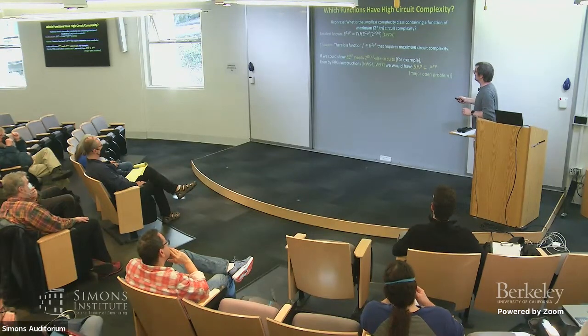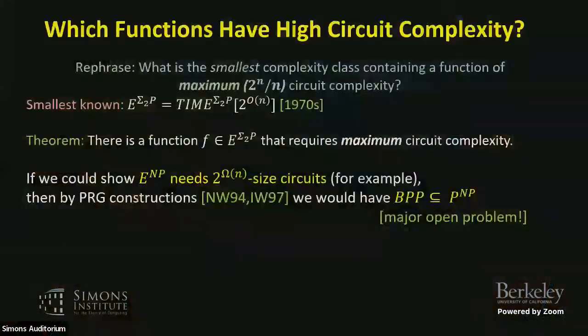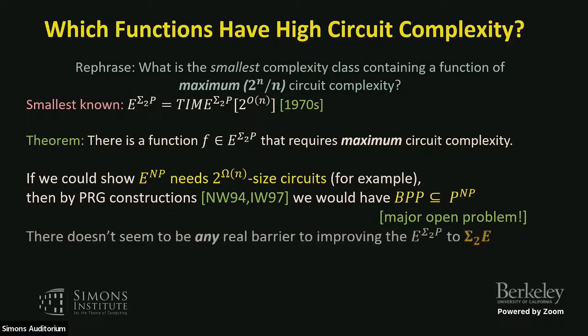If we could show that E^NP — which is supposedly smaller — needs exponential-size circuits, then by PRG constructions (assuming it holds almost everywhere), we'd have BPP contained in P^NP. That would be a major open problem solved — improving the containment of BPP in sigma_2 or MA to P^NP. But this is what we're up against when trying to show a smaller function needs exponential circuit complexity.